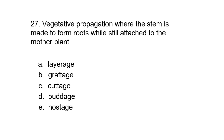Number 27: Vegetative propagation where the stem is made to form roots while still attached to the mother plant — a) layerage, b) graftage, c) cuttage, d) buddage, or e) hostage.